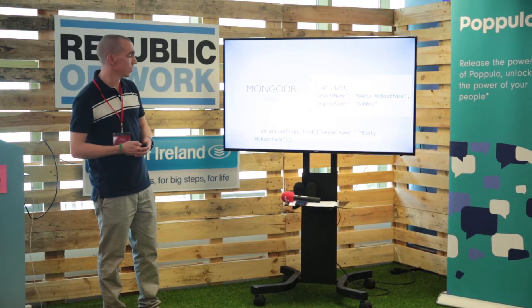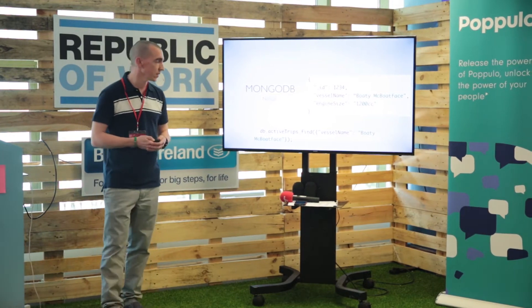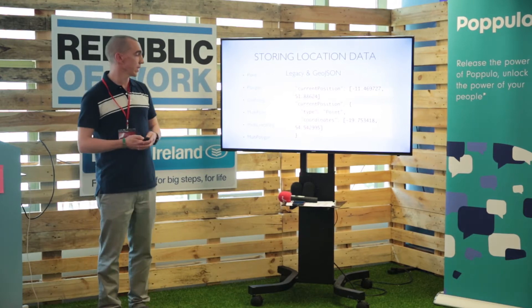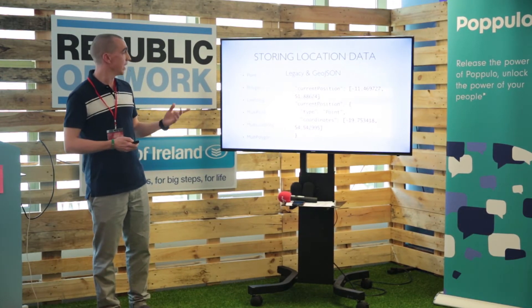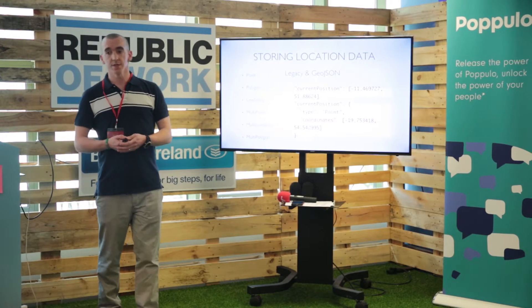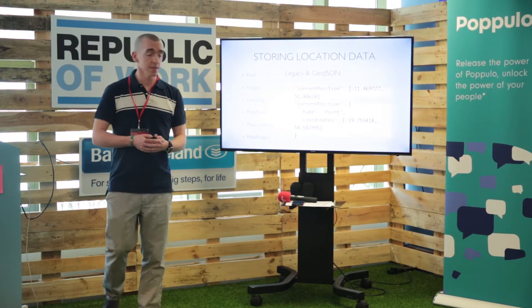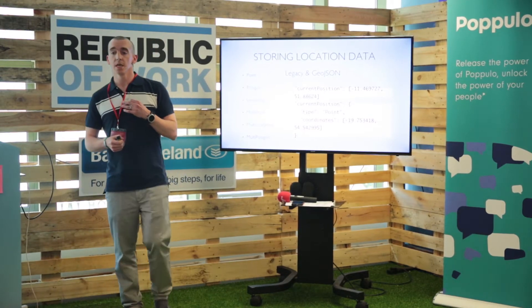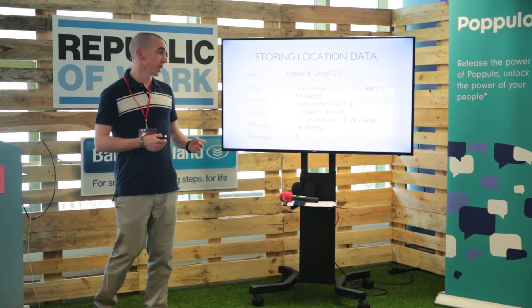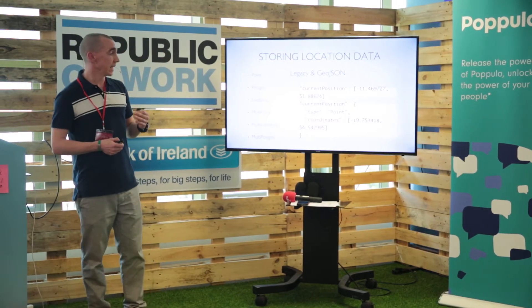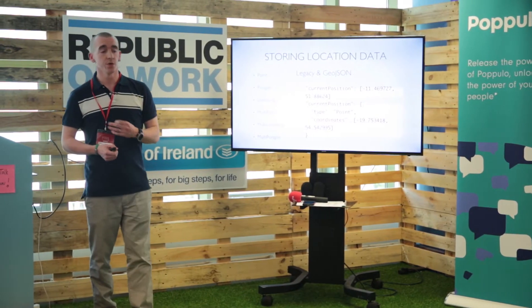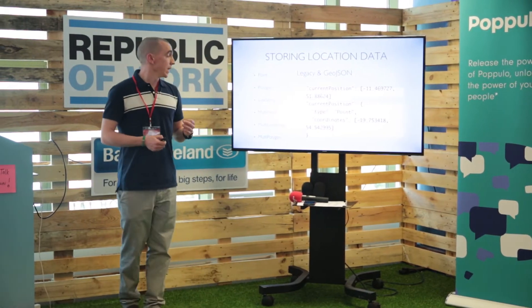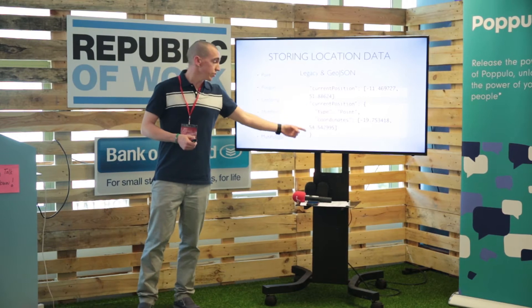You'll notice there's no location data on this document here, so we're going to see the ways that MongoDB supports location data. It supports two different formats. The first one is an array of longitude followed by latitude — you'll see this referred to as the legacy format in the Mongo docs. This format and the legacy index are still supported, but you don't get the full range of geospatial queries, so we're not going to look at that any further. Instead we're going to focus on the GeoJSON standard.